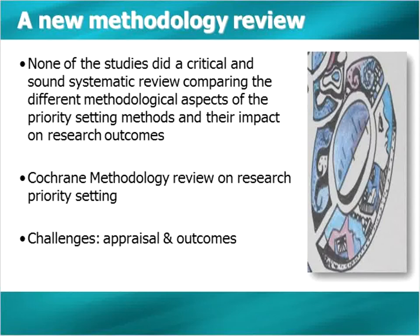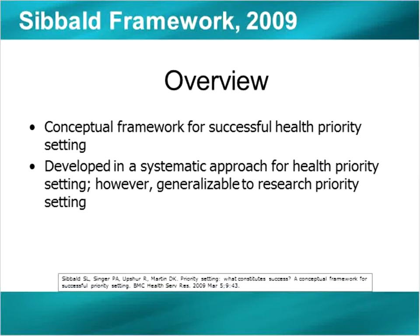Looking at all of the spectrum, there was no other systematic review that really compared different methodological aspects and looked at their impact on research outcomes, so we decided to do our own review. The review is still ongoing because we are faced with a number of challenges — what kind of appraisal tools should be used, what outcomes should be used — and we are still in discussion about the best way to do that. We also present a framework for health priority setting. We conducted a survey in 2008 and were evaluating results of Cochrane review groups in 2009 and 2010.